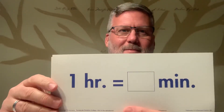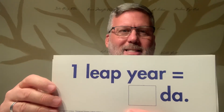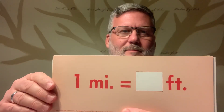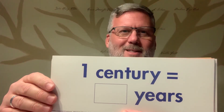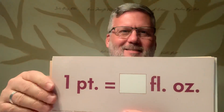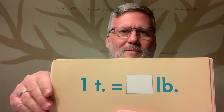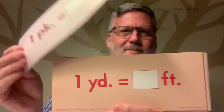Twelve. Sixty. Three hundred sixty-six. Twenty. Eight. Five thousand two hundred eighty. One hundred. Sixteen. Twelve. Twelve. Two thousand. Two thousand. Eight.